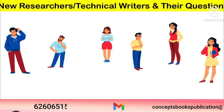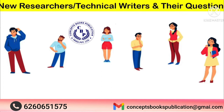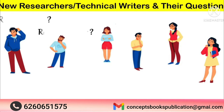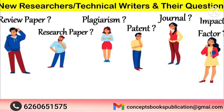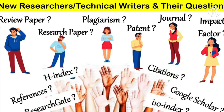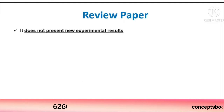This presentation is mainly aimed at answering the questions of new researchers and technical writers. When an individual starts their journey of becoming a researcher and opts for technical writing, they have many questions running in their mind — such as: what is a review paper, research paper, plagiarism, patent, journal impact factor, h-index, i10 index, citations, references, Google Scholar profile, and ResearchGate. This video is an attempt to answer all these questions.